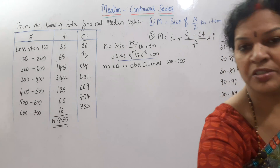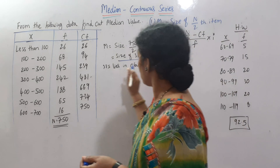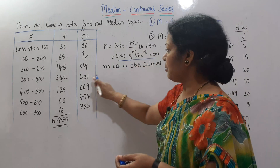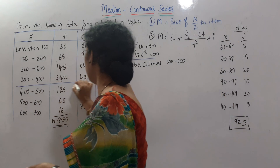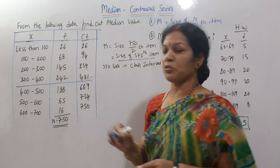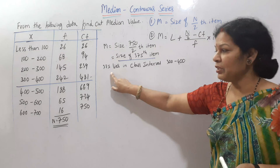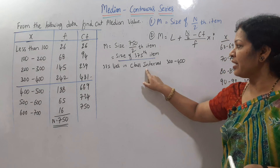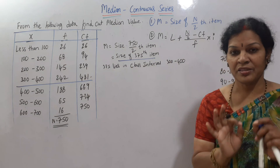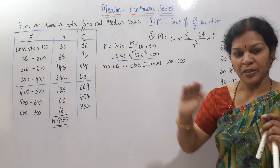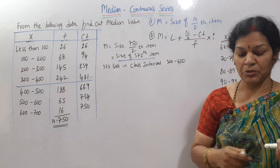This is the major step: identifying the class interval where 375 lies. The next cumulative frequency above 375 is 481, meaning 375 falls in the class interval 300 to 400. Draw a line across that row with a pencil to clearly identify all the values you need for the next formula.